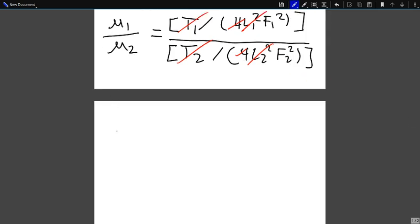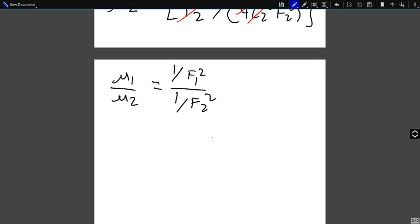So we end up with the relatively simple ratio of mu1 over mu2 equals 1 over F1 squared over 1 over F2 squared, or somewhat more clearly mu1 over mu2 equals F2 squared over F1 squared. So we'll call F1 the original tuning, or sorry, the drop tuning.